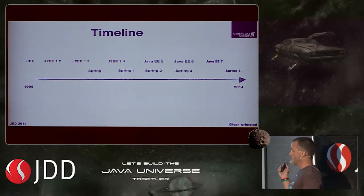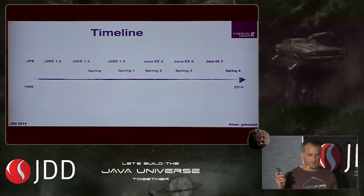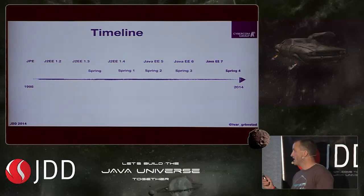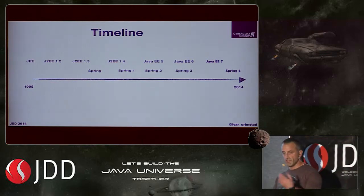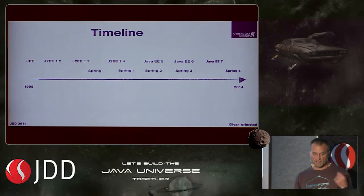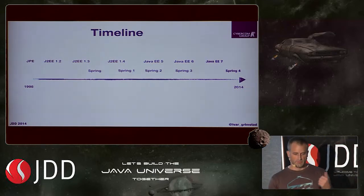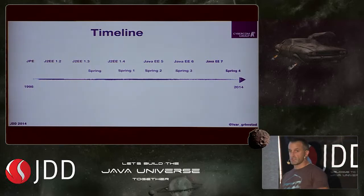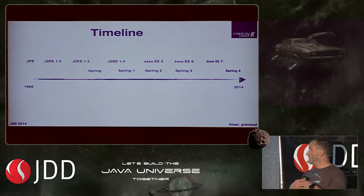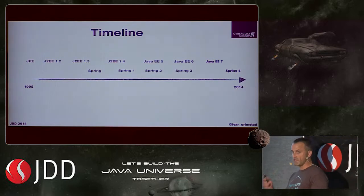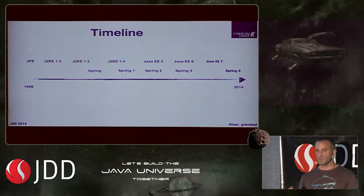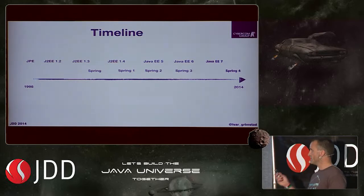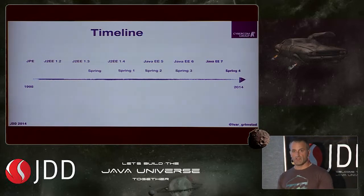A little history. Java EE, or as it was called then, Java Professional Edition, was first talked about in 1998. Then they changed the name to Java 2 Enterprise Edition — J2EE — and it followed through versions 1.2, 1.3, and 1.4, and it just grew bigger and bigger and less and less useful. That's why Spring came in 2002, and the first milestone release of Spring was in 2004. It's a significantly newer framework, but it has been around for more than 10 years.